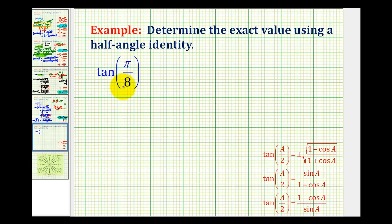In this example, we want to determine the exact value of tangent π/8 using a half-angle identity. Notice we have three options for the half-angle identity for tangent. In this video, I'm going to use this last identity because it has the simplest denominator.